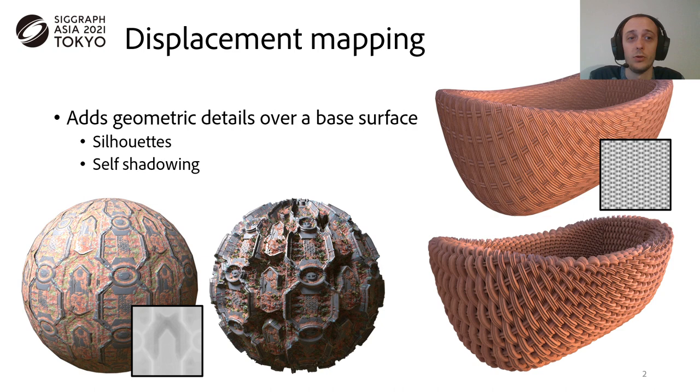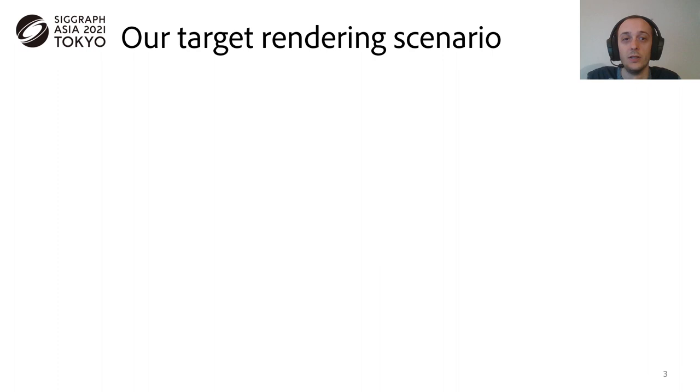Displacement mapping is a powerful tool for adding geometric details over a base surface by applying an offset called displacement along the normal. The displacement intensity is being represented here as the grayscale images. As you can see with this rendering with and without displacement, displacement mapping has a great impact on a final appearance, especially regarding silhouettes and self-shadowing.